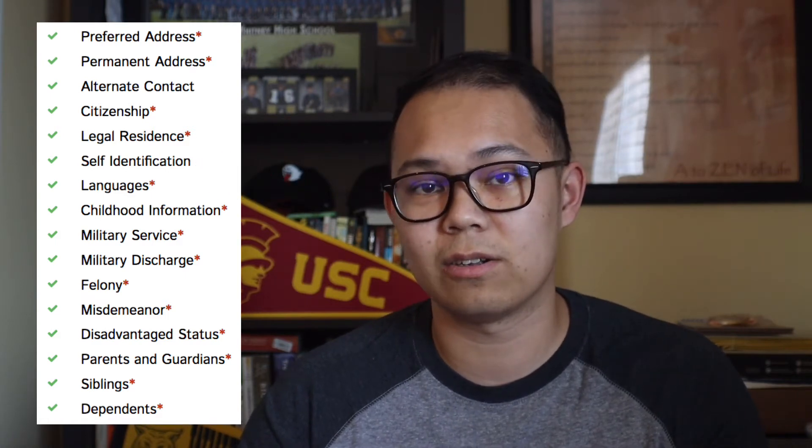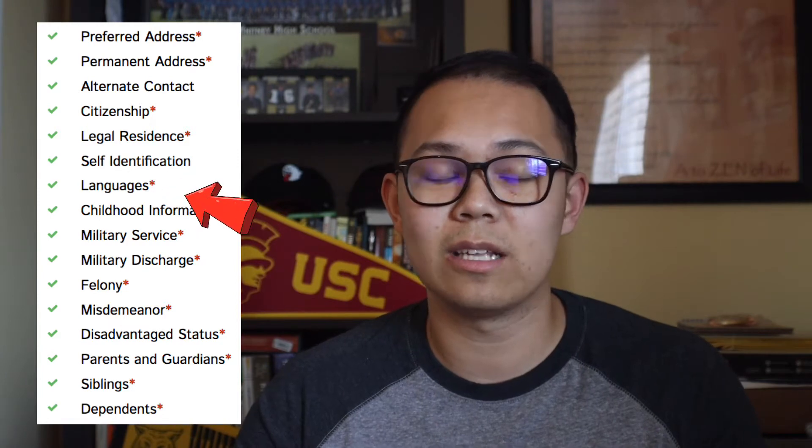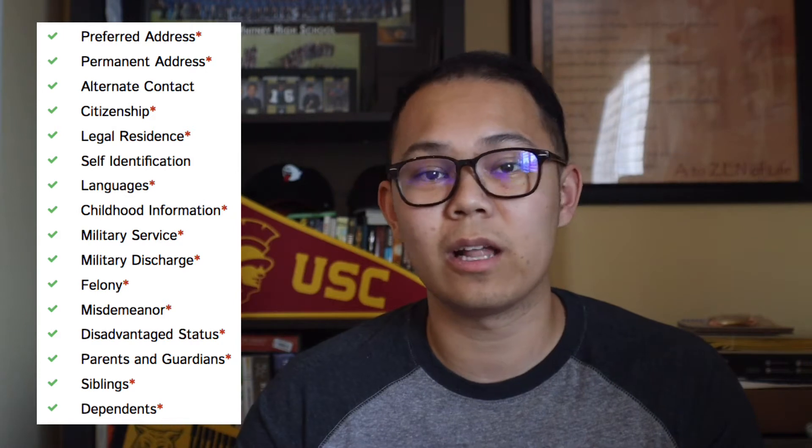The third portion is the biographic information portion. It's pretty self-explanatory and easy to fill out, but there are some key parts to highlight. The first is the self-identification section, where you can list out your ethnicity or choose not to. The next part is languages, where you can list out any languages you speak at different proficiencies, and they ask you to clarify whether you speak it at home or how fluent you are in that language.